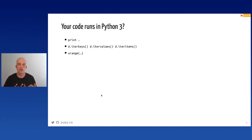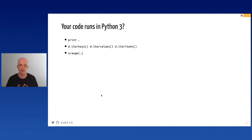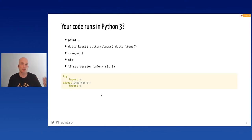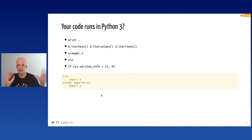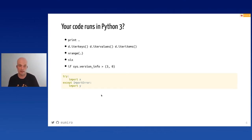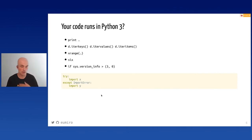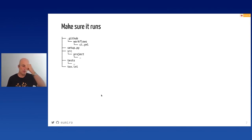If your code runs on Python 3, your prints are functions, you iterate over dicts directly with keys/values/items rather than iter_keys/iter_values, you use range instead of xrange, and you can probably get rid of the 'six' library. Also check for any 'if' blocks doing different things for Python 2 and Python 3, and any try/except ImportError blocks — all of these can be removed.